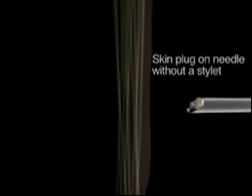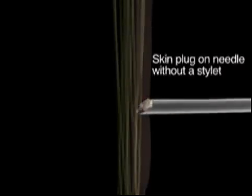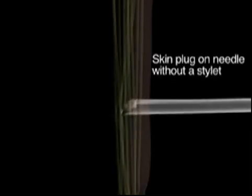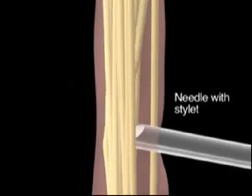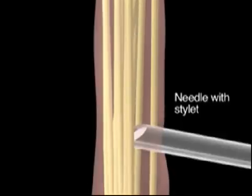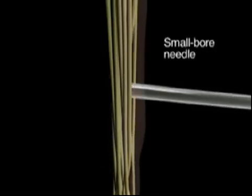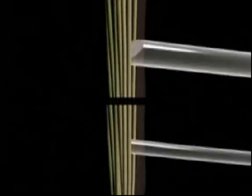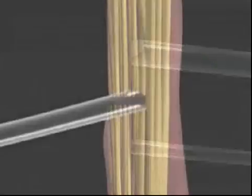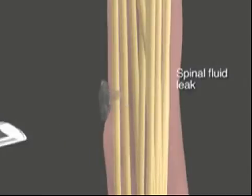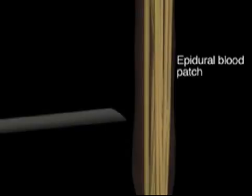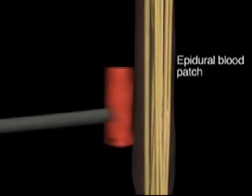A subarachnoid epidermal cyst occurs when a skin plug is introduced into the subarachnoid space; standard use of a needle with a stylet will avoid this complication. Leakage of spinal fluid can occur at the puncture site. A large-bore spinal needle is more likely than a smaller-bore needle to produce a leak, so the latter should be used whenever possible. In the case of persistent leakage, an anesthesiologist should be consulted to determine whether a blood patch is needed to occlude the leak.